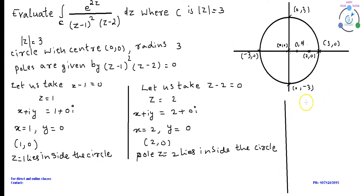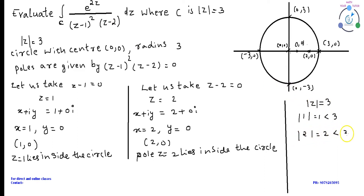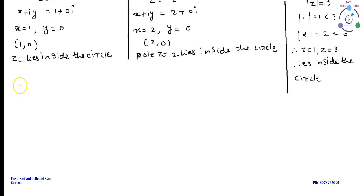We have a simple alternate method to check whether the points Z equal to 1 and Z equal to 2 lie inside or outside without drawing the circle. Put Z equal to 1: mod(1) equal to 1, which is less than 3. Therefore the pole Z equal to 1 lies inside the circle. Put Z equal to 2: mod(2) equal to 2, which is less than 3. Therefore both Z equal to 1 and Z equal to 2 lie inside the circle.